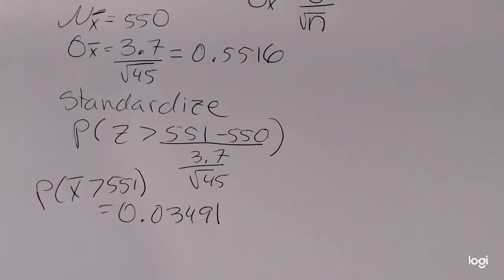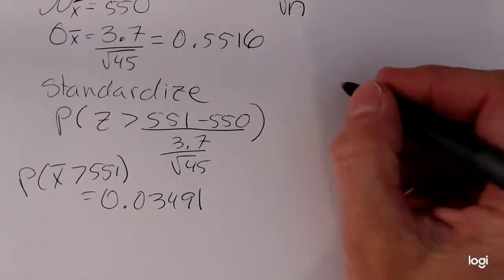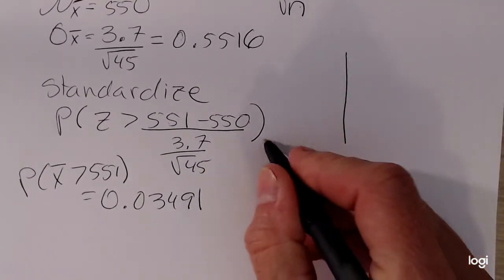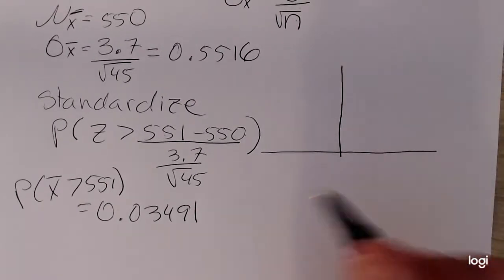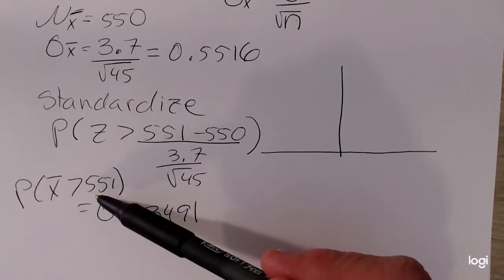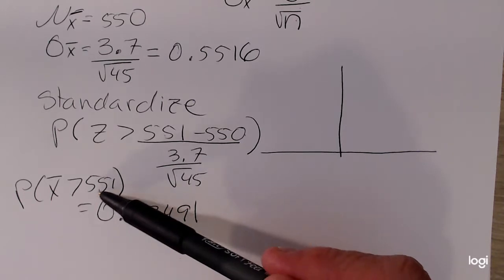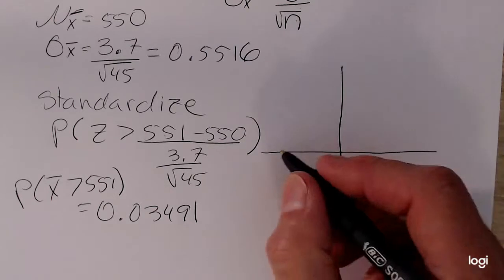Now one thing I didn't do, which is something that I strongly suggest for all examples, or all problems, is to sketch the area being asked. Once you get comfortable with this, you can recognize the greater than case, your lower bound is going to start from 551, and you're going to go up to a very large number of positive infinity, theoretically.